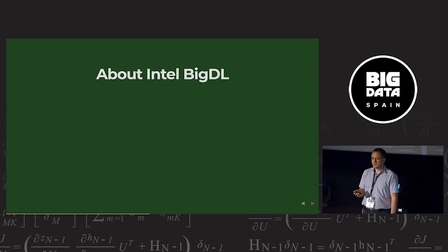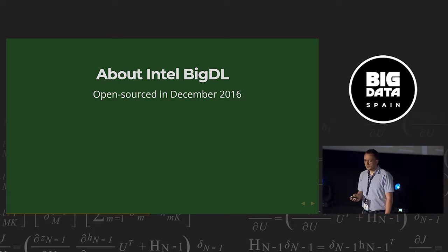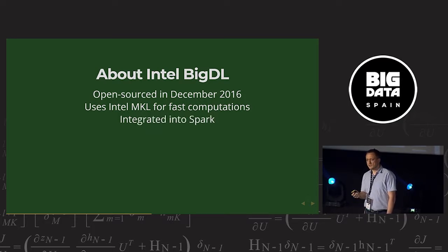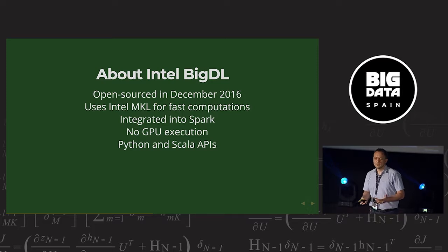About Intel's Big DL library framework, it's open sourced in December 2016, almost a year ago, and it uses Intel's math kernel library for fast computations. It happens seamlessly, and there's no extra installation steps required for this. It's integrated into Spark. And there's no GPU execution. They only provide learning on Intel CPUs. So you cannot use GPUs with Intel Big DL yet. It's open sourced now, so maybe the community might contribute to this.